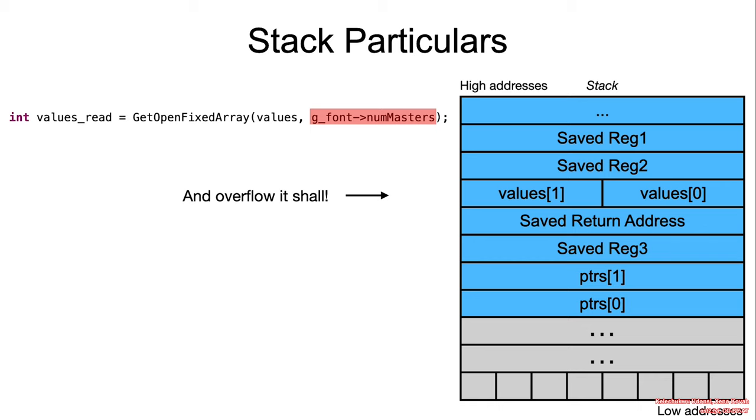Starting with the getOpenFixedArray, values is initially an array that should contain two elements. However, after the call to getOpenFixedArray, all of this stack region will now be occupied by the data in g_font.